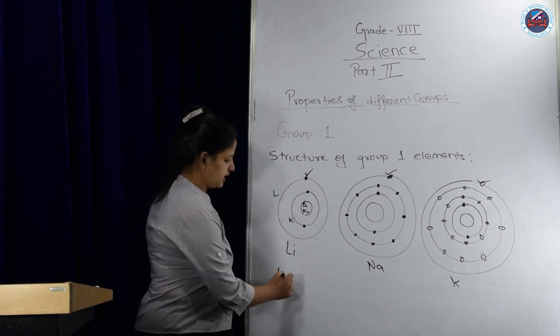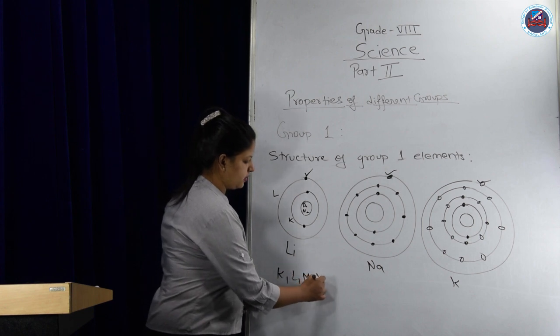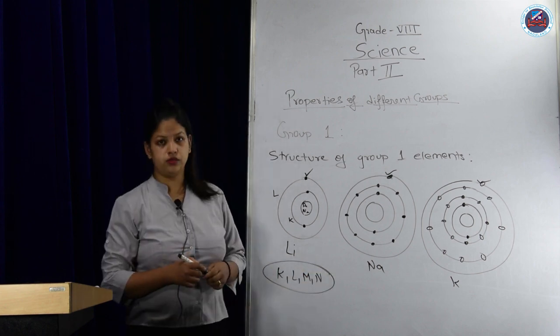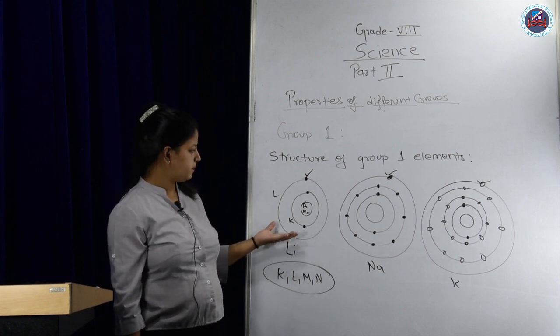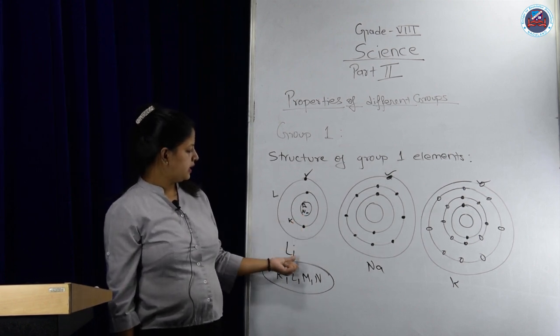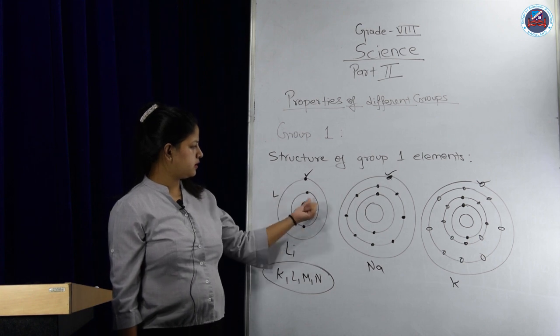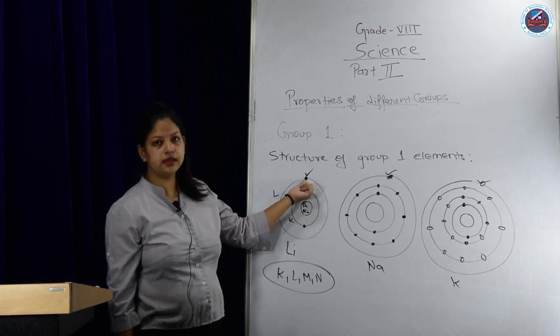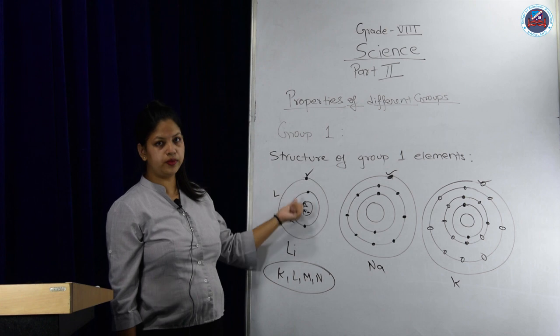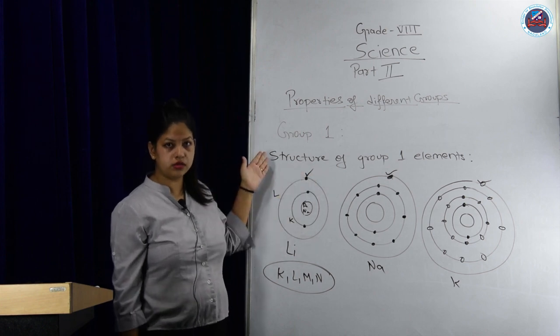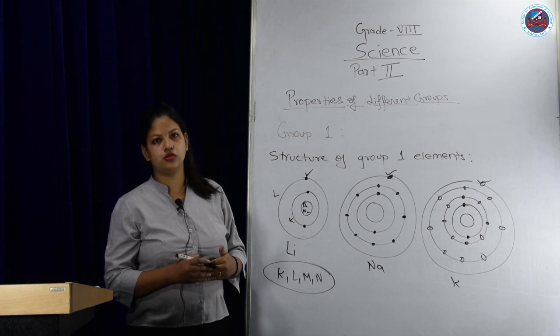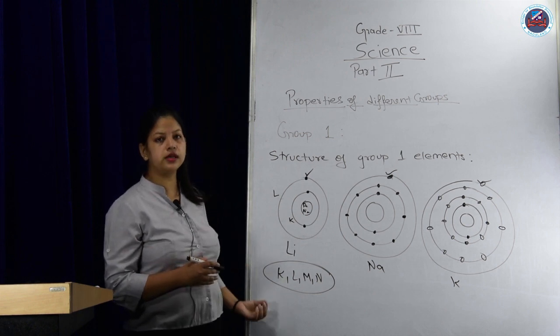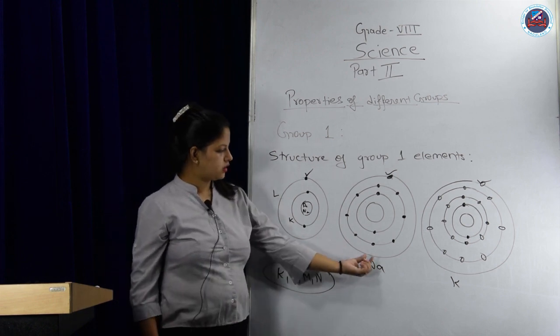We usually denote shells with K, L, M, and N - four orbits which revolve around the nucleus of any atomic structure. For lithium, in the first shell there are 2 electrons and in the second there is 1. So 2 plus 1 equals 3, and its atomic number is also 3.